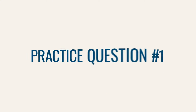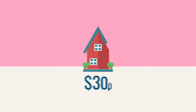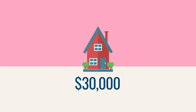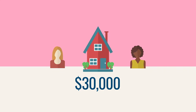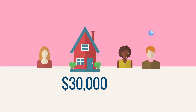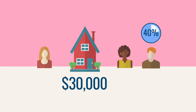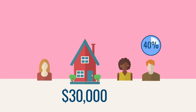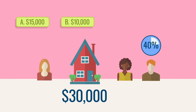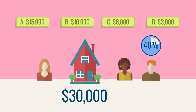Practice question number one. Suppose a $30,000 commission is earned on the sale of a house. The listing broker and the buyer's broker agree to split the commission evenly. The listing salesperson receives 40% of the listing side. How much will the listing salesperson receive? A: $15,000. B: $10,000. C: $6,000. Or D: $3,000.